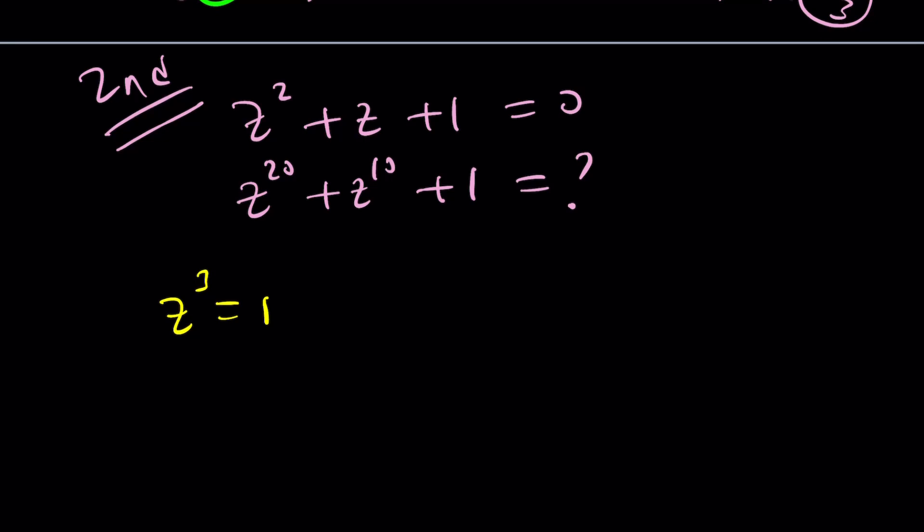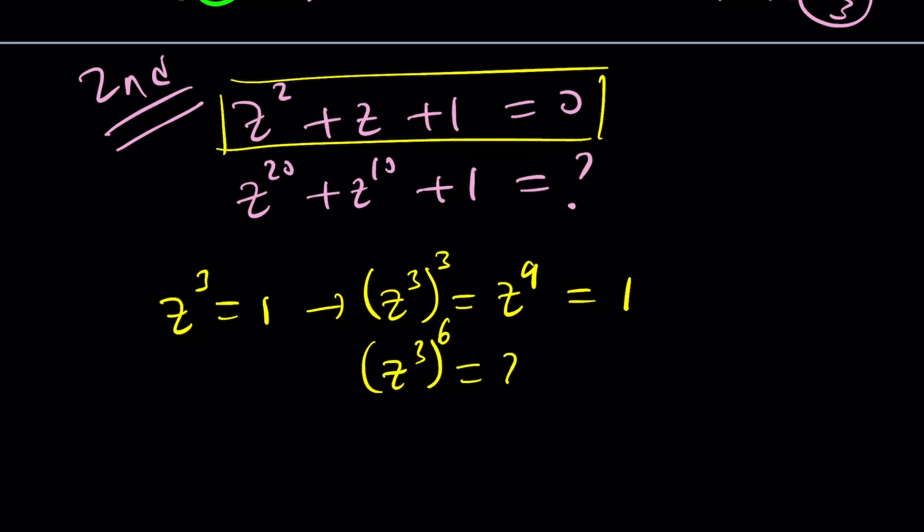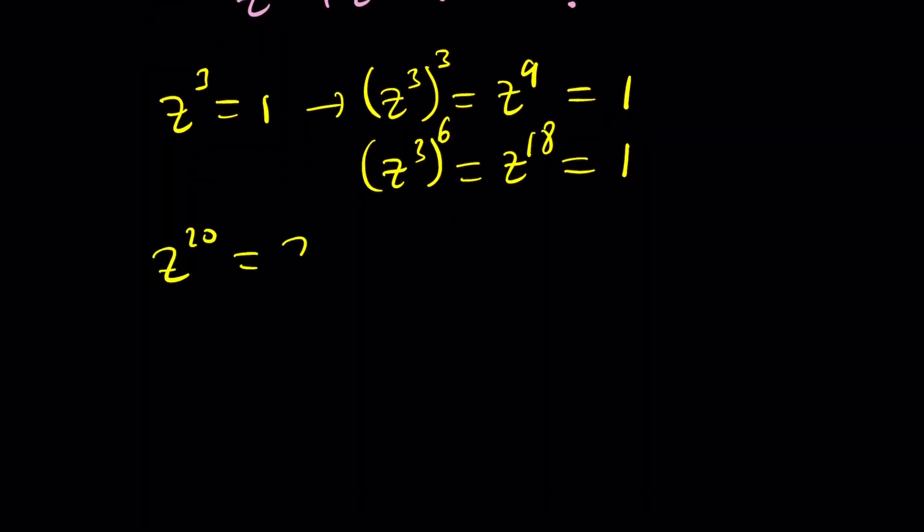So z³ = 1. Since z³ is 1, I can raise both sides to the power 3 to get z⁹ which is also 1. And I can also raise both sides to the 6th power to get z¹⁸ which is 1. I'm not there yet but I'm close. z²⁰ is z¹⁸ times z², and I know that z¹⁸ = 1, therefore this is just 1 times z² and that is z². So z²⁰ is the same as z² and you can definitely check this with the cube roots of unity.